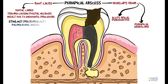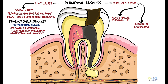Periapical abscess is a polymicrobial disease where anaerobic gram-negative rods and gram-positive cocci have been isolated. Some common microorganisms isolated are Prevotella intermedia, Fusobacterium nucleatum, Porphyromonas gingivalis, and Peptostreptococcus species.